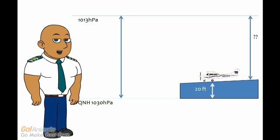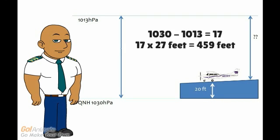Let us look at an example. We are at an airport with an elevation of 20 feet. The QNH is 1030. The difference is 1030 hectopascals minus 1013 hectopascals. The result is multiplied by 27 feet according to standard atmospheric conditions, which gives us 459 feet.